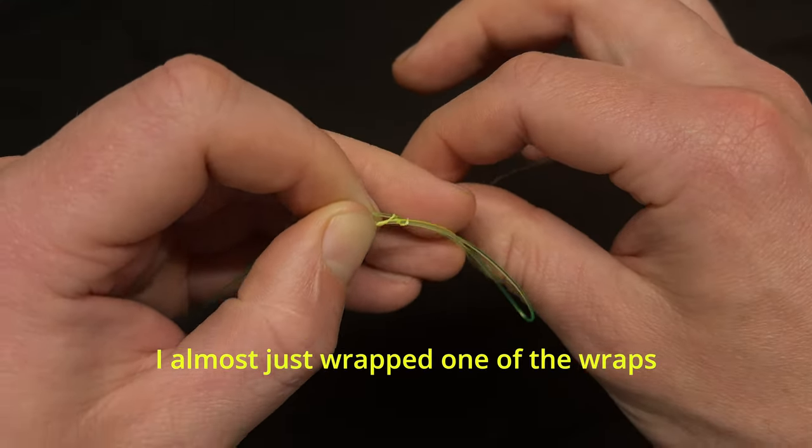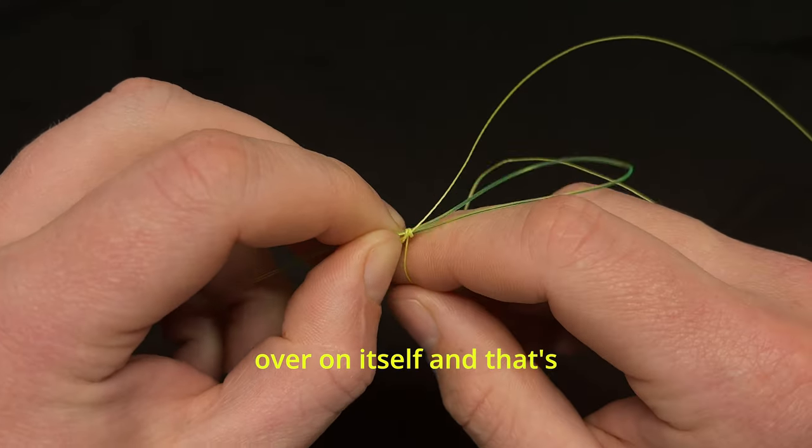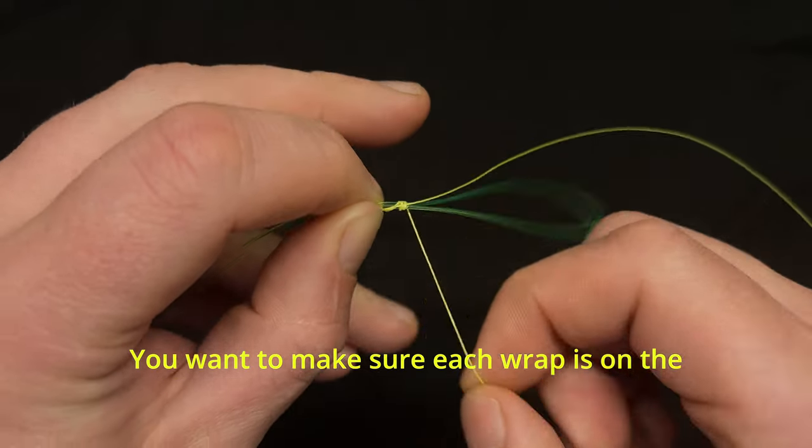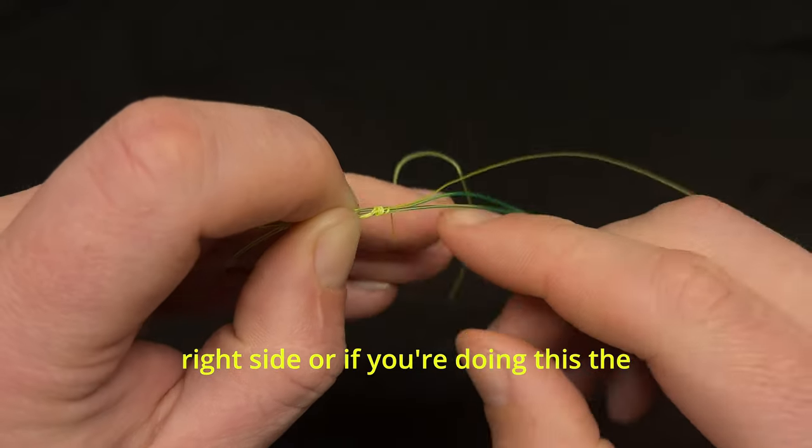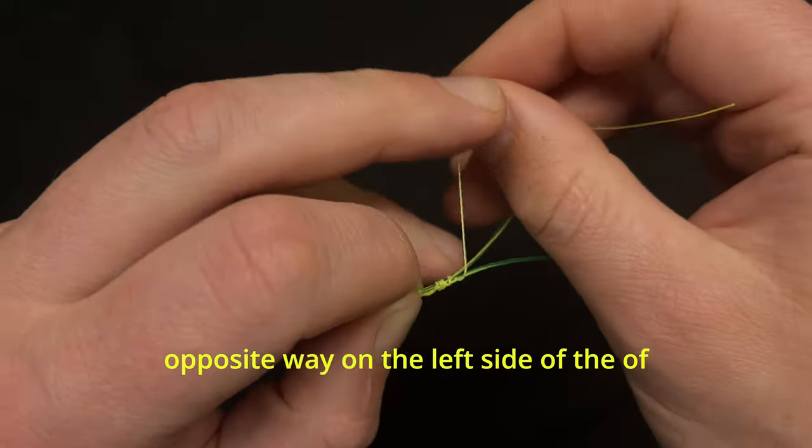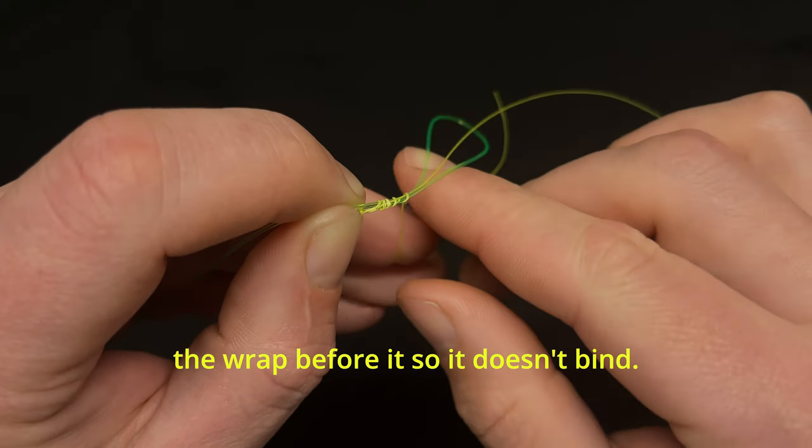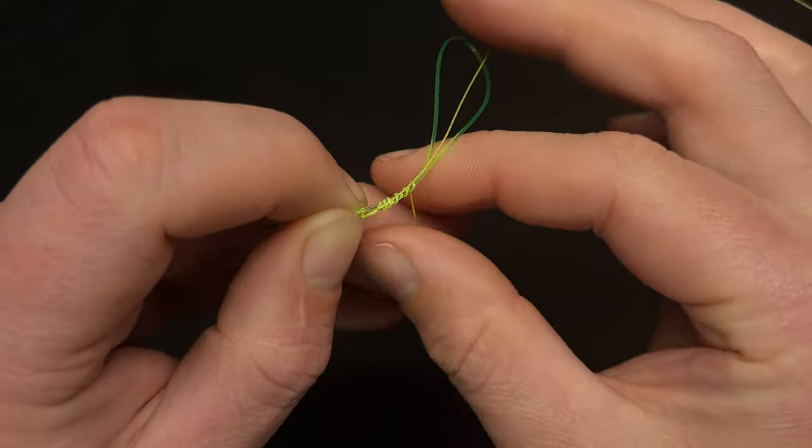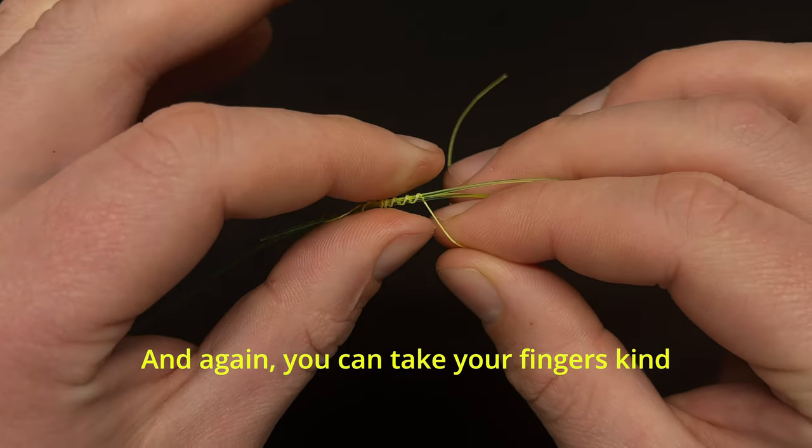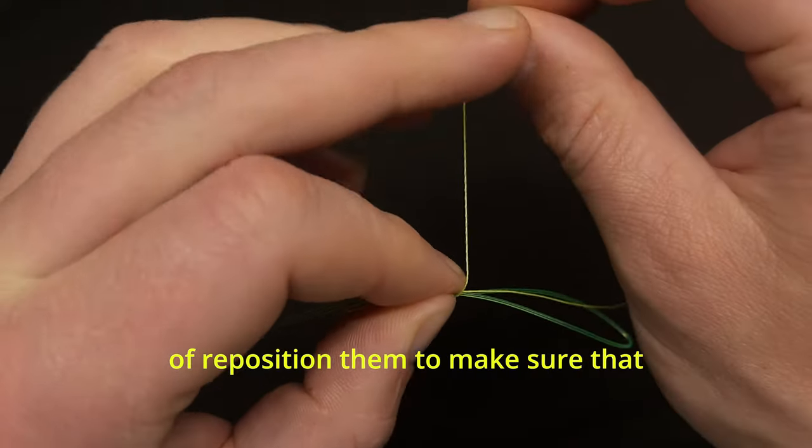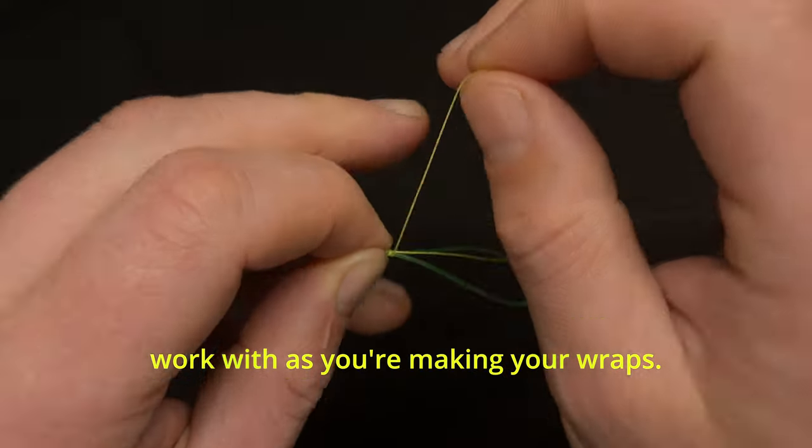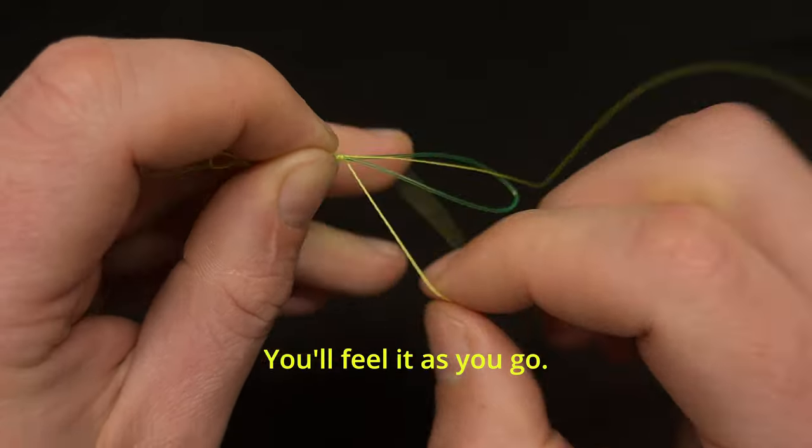I almost just wrapped one of the wraps over on itself and that's something you don't want to do. You want to make sure each wrap is on the right side, or if you're doing this the opposite way, on the left side of the wrap before it so it doesn't bind. You can take your fingers and reposition them to make sure that everything stays pinched and is easy to work with as you're making your wraps. You'll feel it as you go.